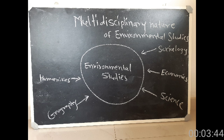Environmental studies and geography are also closely related. Geography covers concepts such as ecosystems, food chains, and food webs. Geography and environmental studies are related to science, and together they provide an integrated understanding of the environment.